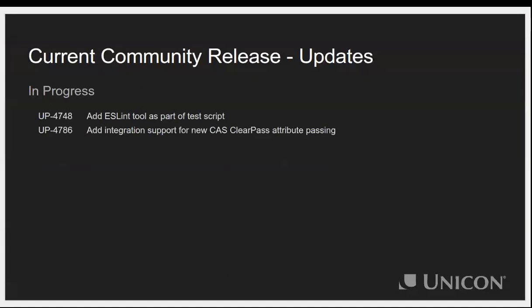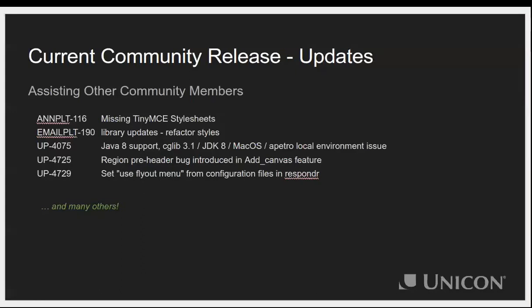In progress: UP-4748 is ESLint, a static analysis and style checking tool for JavaScript. UP-4786 addresses that the latest version of CAS does not support old clear-pass quotes — thanks to California State University Sacramento, new preloads are being integrated. Our team currently handles most of the review and merging of pull requests to the portal release branch.